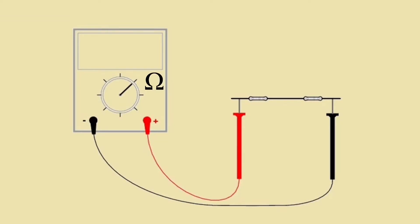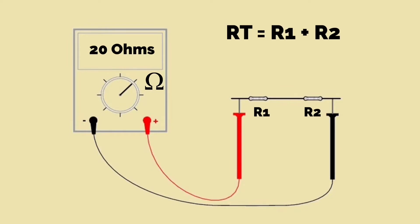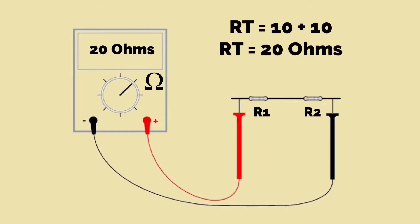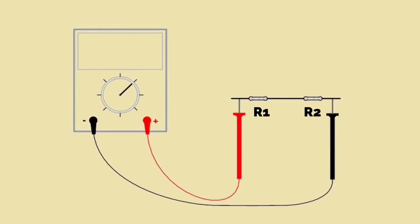We have now added a second resistor and have two resistors connected in series. The total resistance in a series circuit is the sum of the individual resistors. Labelling them R1 and R2, the total resistance RT equals R1 plus R2. If both resistors are 10 ohms, the total resistance in the circuit would be 10 plus 10, giving a total resistance of 20 ohms.